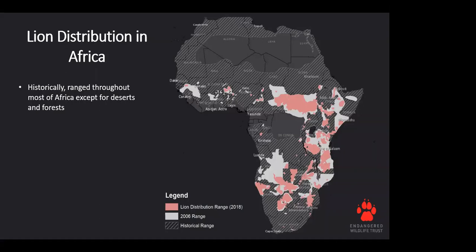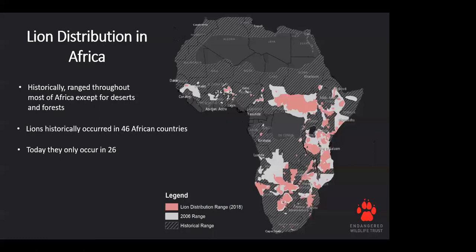As you can see from this map, you can really see how their range in Africa has contracted. The hashed lines across the African continent show where they once were known to occur. The grey areas show where their distribution was mapped in 2006, and our recent mapping process in 2018 shows their range has shrunk further to the pink and coral blocks on the map. Lions historically occurred in 46 African countries, but today they only occur in 26, having been extirpated from 13 and believed extinct in another six.